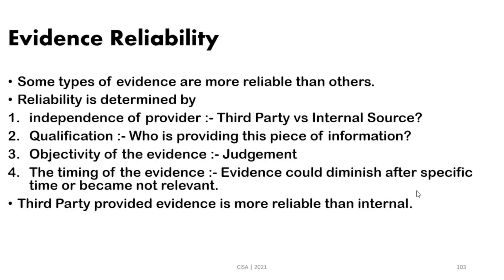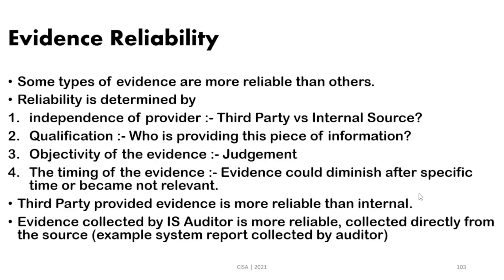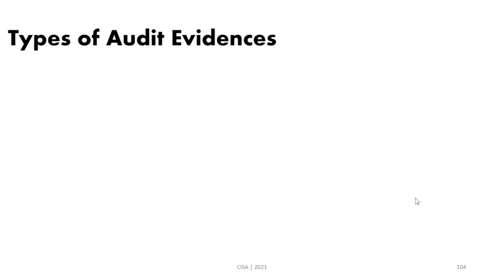Third-party provided evidence is more reliable than internal evidence. From a CISA perspective, the most reliable evidence is that collected by the IS auditor directly from the source system — not an Excel sheet provided by the system administrator, but evidence where the auditor has read-only access to the system, runs a query, and exports a report directly.